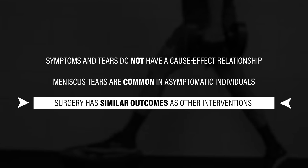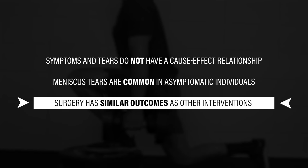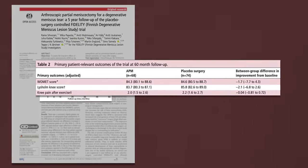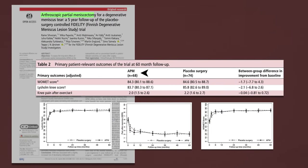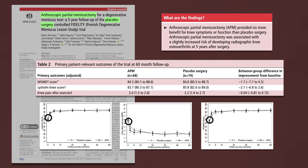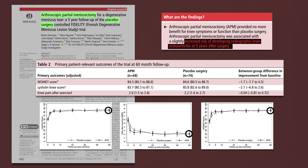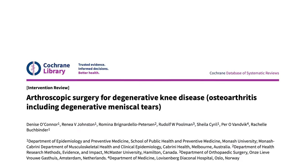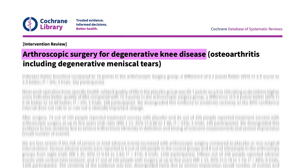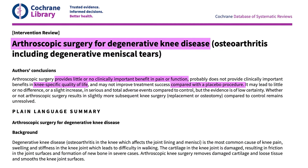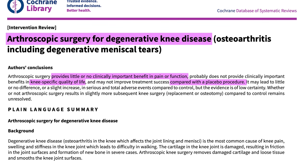This leads us to the third and final point: surgery to remove or repair the meniscus has not been shown to lead to better outcomes compared to other interventions. In one popular study, researchers compared a partial meniscectomy — a surgery where part of the meniscus is removed — to a placebo or sham surgery. Over the course of five years, surgery provided no more benefit for knee symptoms or function than placebo surgery. It even led to an increased risk of developing radiographic knee osteoarthritis.